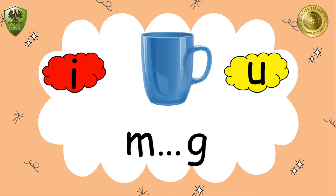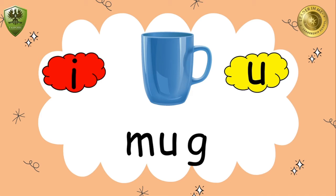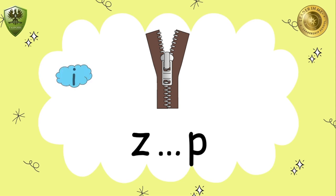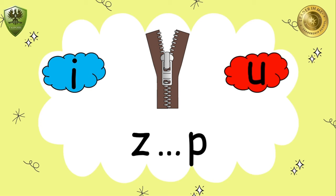The middle sound of 'mug' is 'uh'. Mug, mug. The fourth picture is 'zip'. The middle sound of 'zip' is 'e' or 'uh'? Yes, the middle sound is 'e'. Zip. One more time: zip.